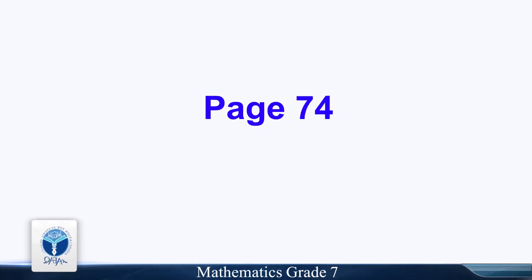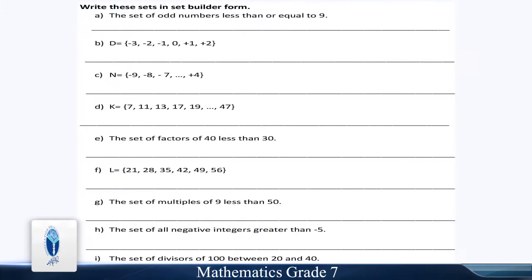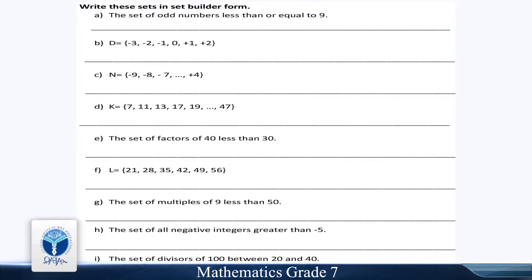Page 74. Write these sets in set builder form. Part A: The set of odd numbers less than or equal to 10. Part B: D is equal to minus 3, minus 2, minus 1, 0, plus 1, plus 2.